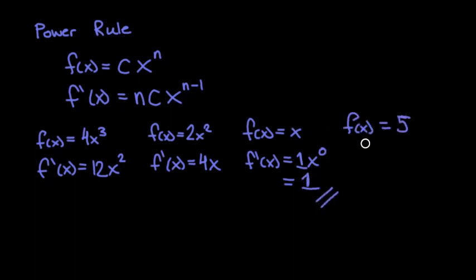Last example is f(x) equals 5. So that would be the same as 5x to the 0, which is still 5.